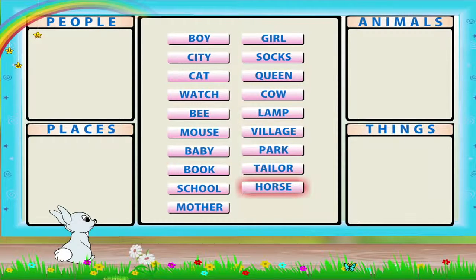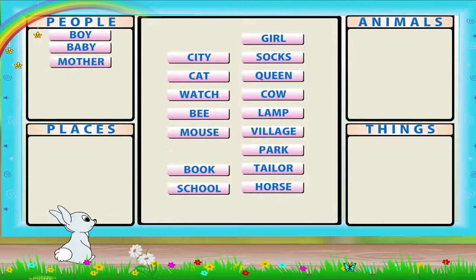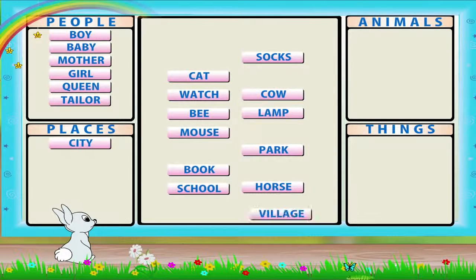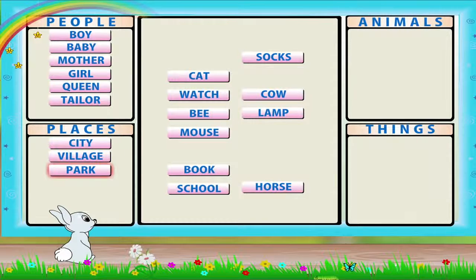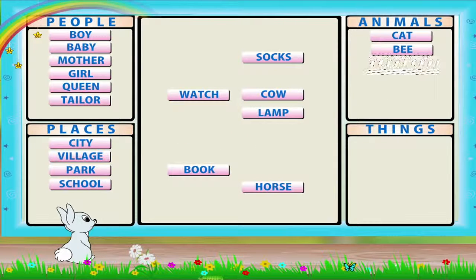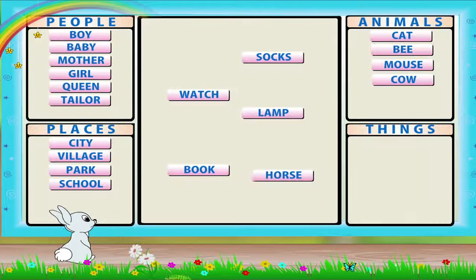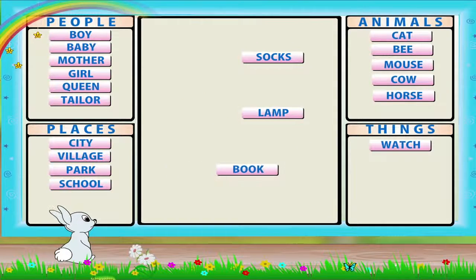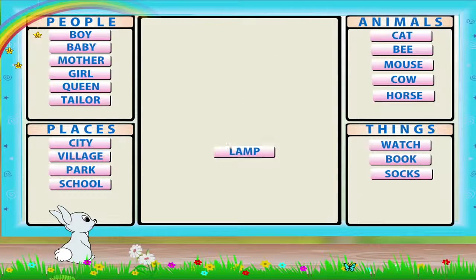People: boy, baby, mother, girl, queen, tailor. Places: city, village, park, school. Animals: cat, bee, mouse, cow, horse. Things: watch, book, socks, lamp.